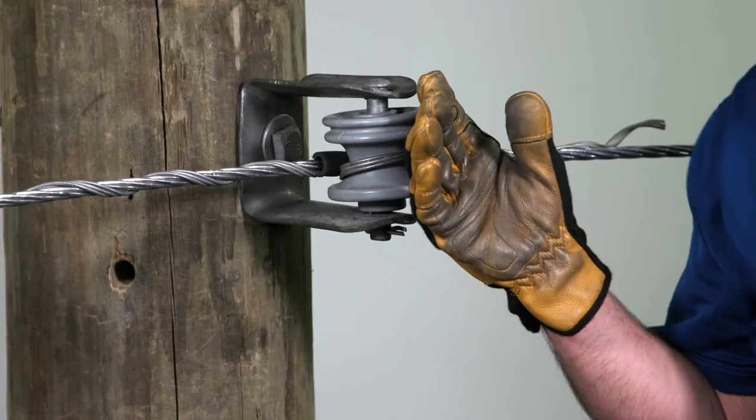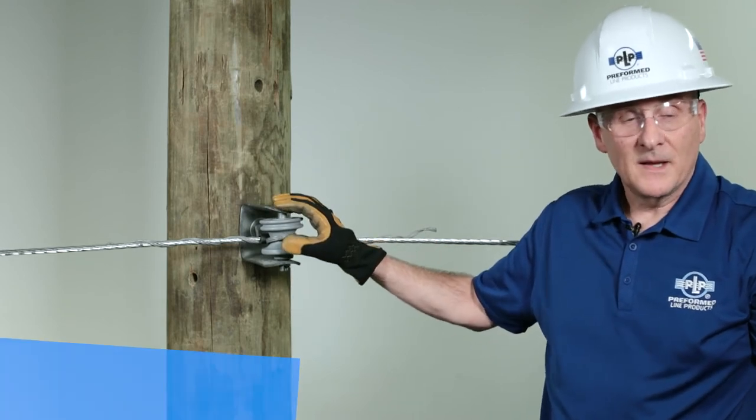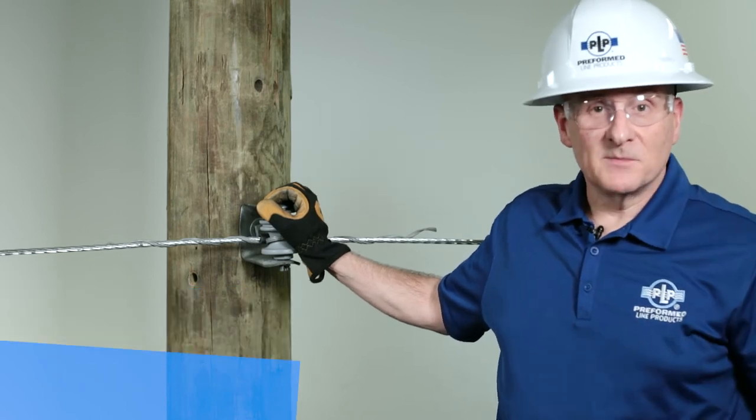And boom, the tie is installed without having to pull the insulator out of the clevis. Thank you for watching this PLP distribution tip and trick and keep your eye out for some more.